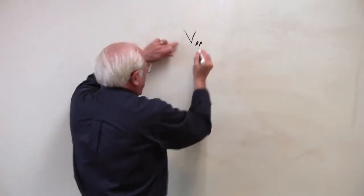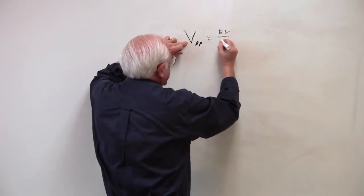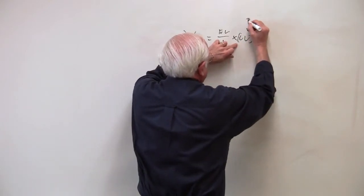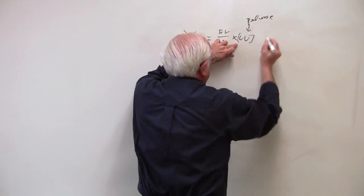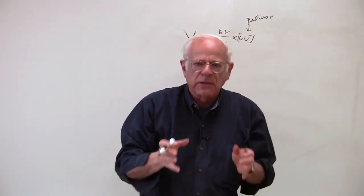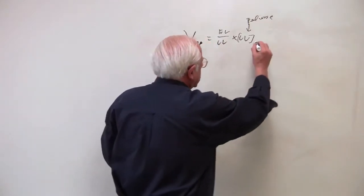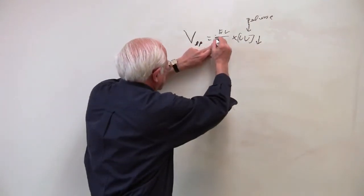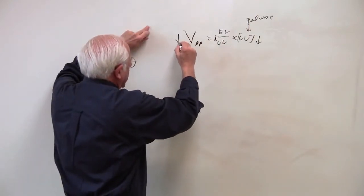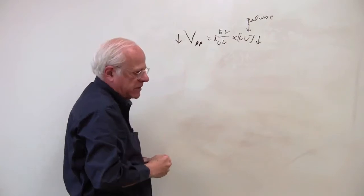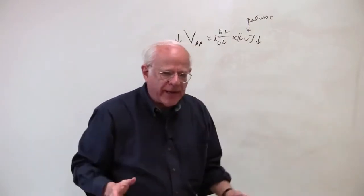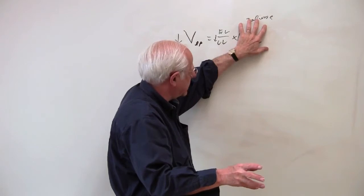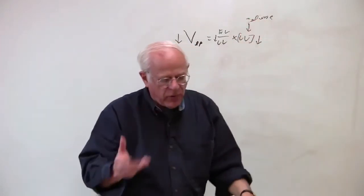Recall: the value of labor power for all workers is equal to the exchange value per unit use value times the unit use value. This component — the exchange value per unit use value — is what economists call the real wage. The argument is that the real wage is falling for American workers. At the same time, the unit value of wage goods is falling as well. That is a strong argument for the value of labor power falling in the United States.